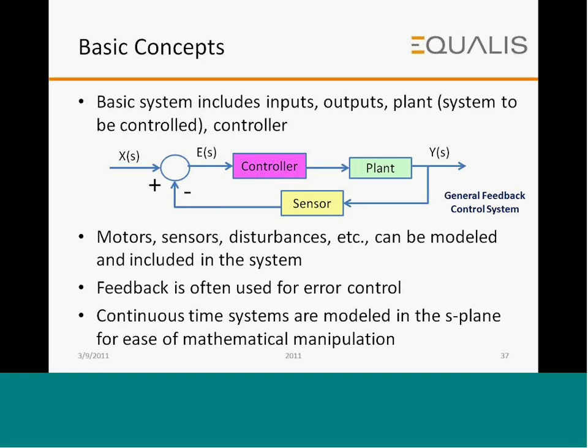For basic control system design: you have a plant and a sensor monitoring some process parameter. The process variable X(s) minus Y gives the error, and the controller corrects for the error, minimizing the difference between X and Y. The controller can send signals to drive motors, read sensor data, model disturbances and sensor noise. Feedback is used for error control. Continuous time systems are modeled in the S-plane for ease of mathematical manipulation.